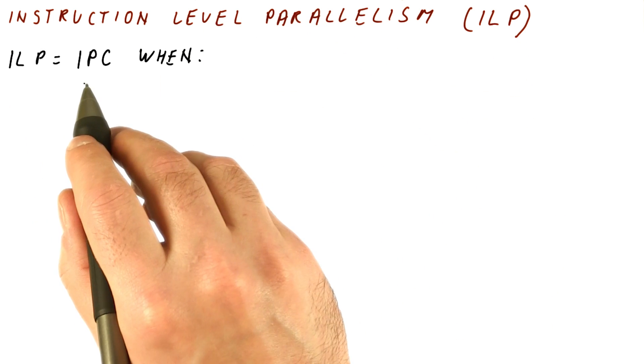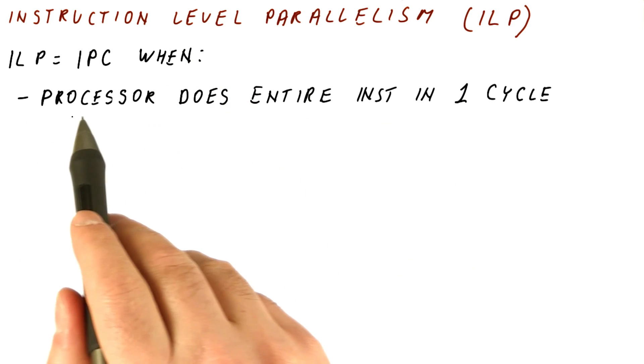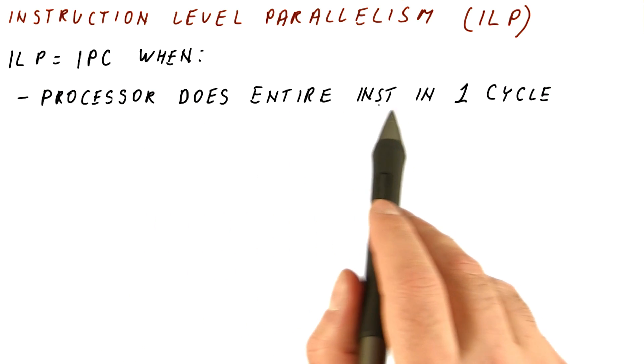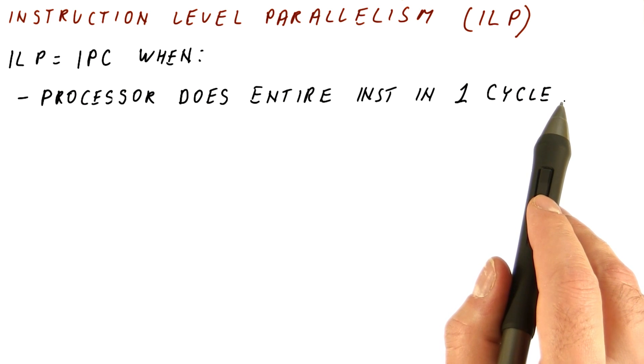The ILP really can be defined as this IPC, instructions per cycle, when we have a processor that can do an entire instruction in one cycle. So it doesn't need a pipeline. It can fetch, decode, execute, write result, everything in just a single cycle for one instruction.